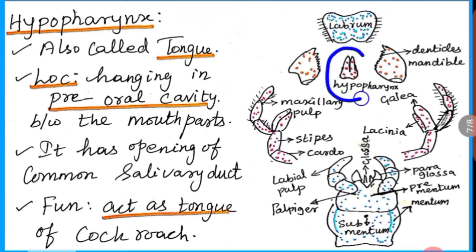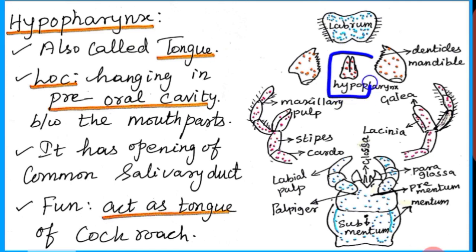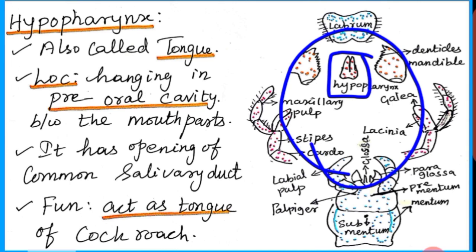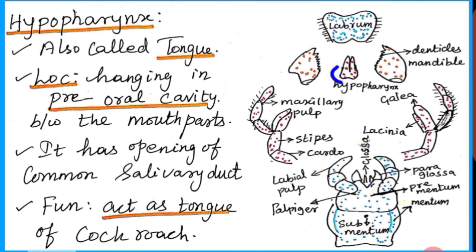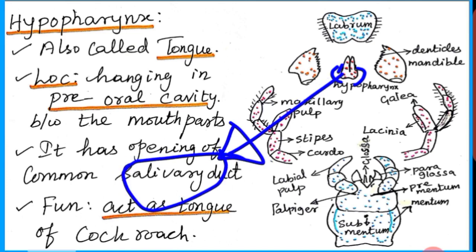Hypopharynx is otherwise named as tongue. Its location is hanging in the pre-oral cavity, which is located between the mouthparts. It has an opening on the side of the hypopharynx called the salivary duct. The function of the hypopharynx is that it acts as a tongue and pushes the crushed food particles to the inside of the oral cavity.